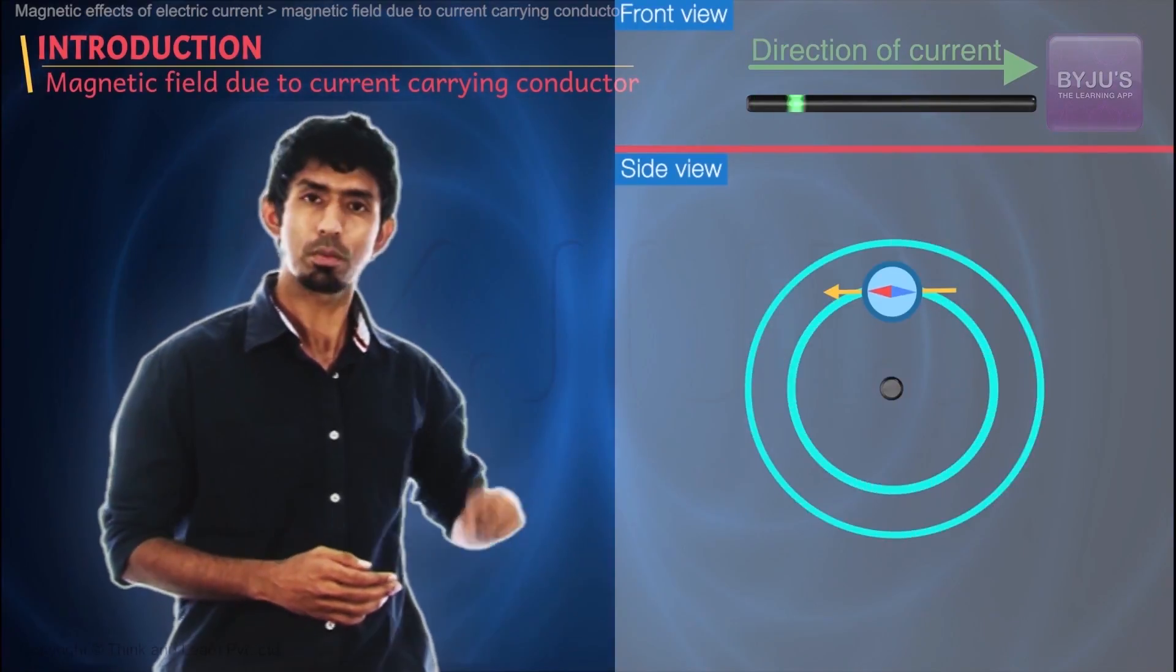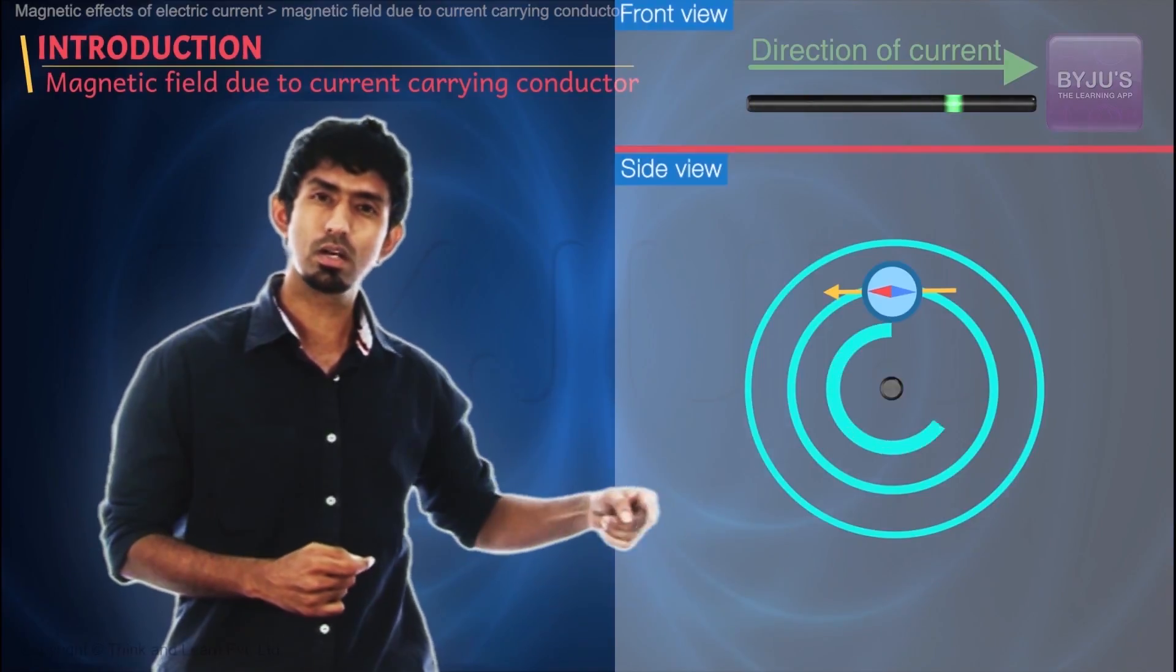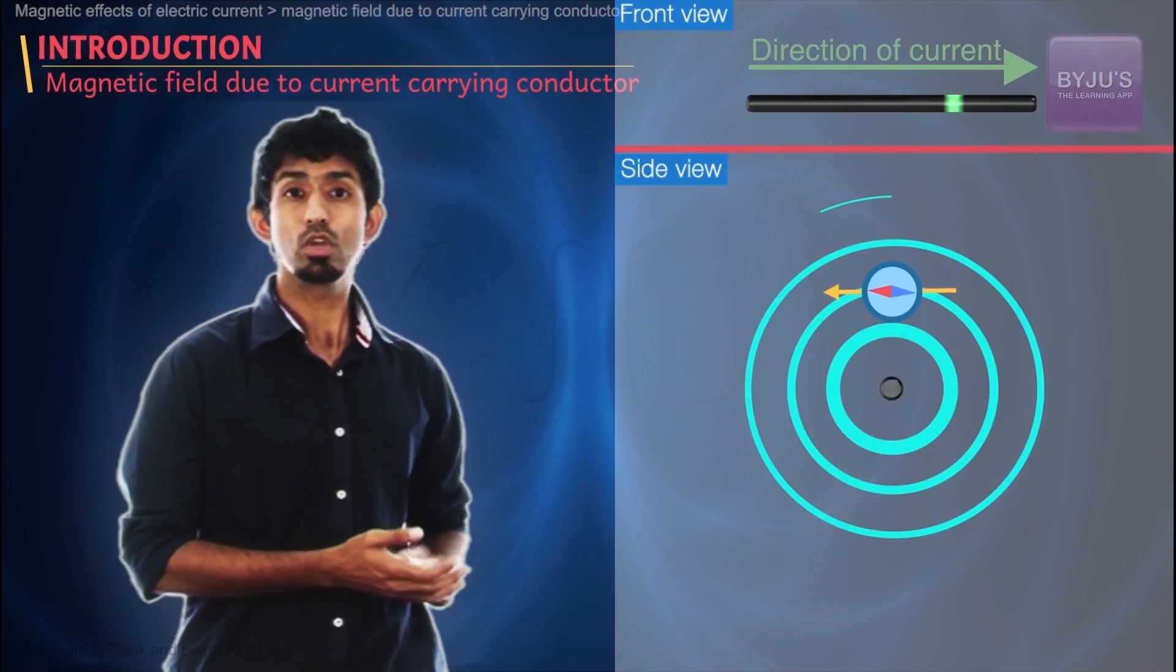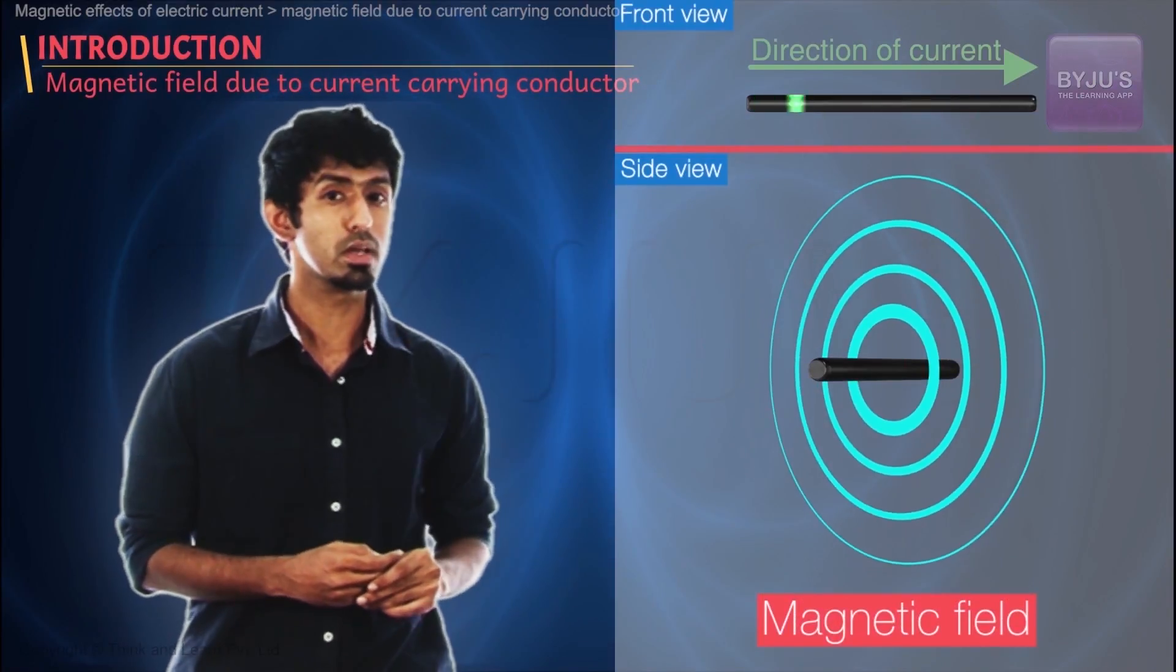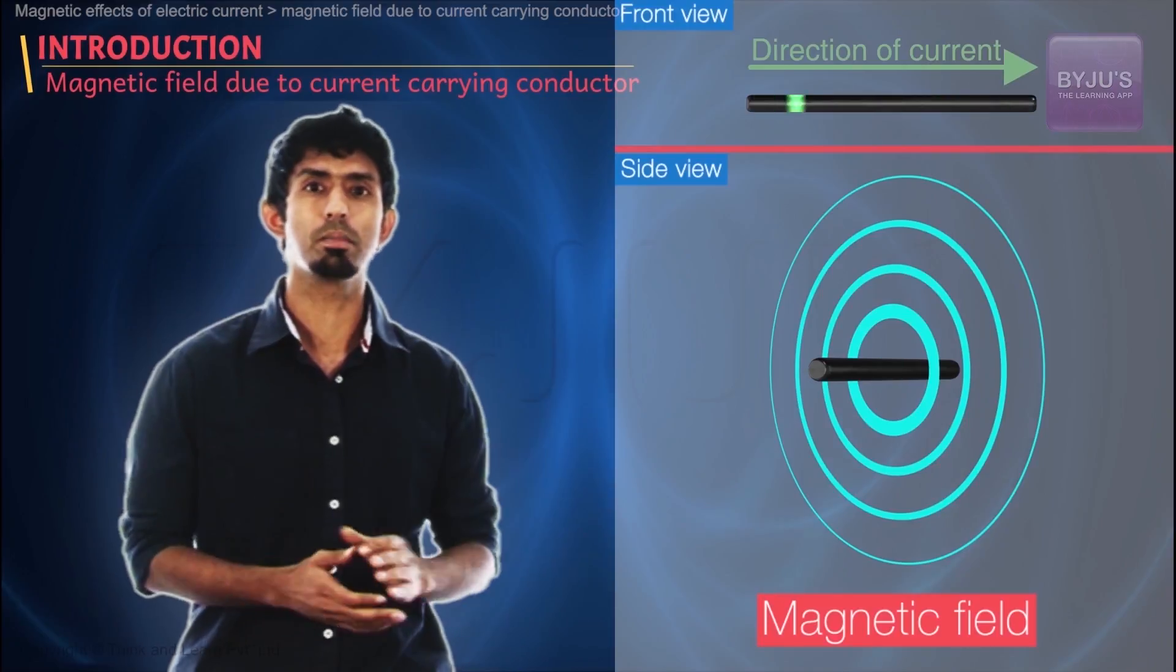You take it farther away and draw it, you get one more circle. You go closer and closer, you have circles that are closer and smaller. You keep doing this, you realize that a current carrying conductor creates a magnetic field around it. In other words, it has an effect just like a magnet.